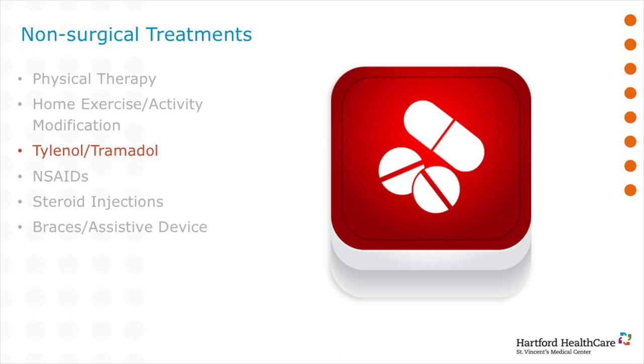I often counsel my patients to avoid high impact activities such as running and alternatively recommend exercising with a recumbent bike, elliptical, or swimming. Tylenol is a pain reliever that can be effective in reducing mild arthritis pain, while tramadol is a mild narcotic effective in reducing severe arthritic pain. Stronger narcotics like oxycodone, Vicodin, and OxyContin are not generally recommended for the treatment of chronic pain in osteoarthritis due to the potential for addiction.